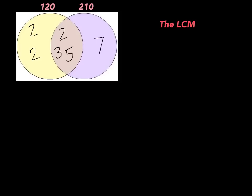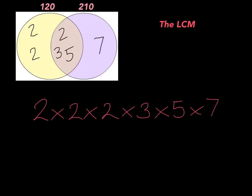Let's try the same thing to find the lowest common multiple. Remember, multiply all the numbers inside the entire Venn diagram: 2 × 2 × 2 × 3 × 5 × 7. Using a calculator or mental math, 2 × 2 × 2 × 3 × 5 × 7 = 840. So the lowest common multiple for 120 and 210 equals 840.